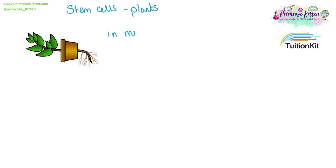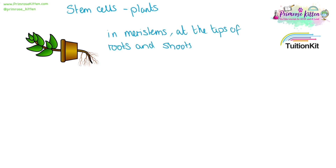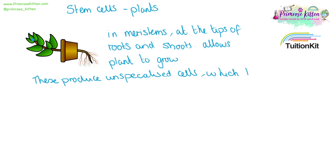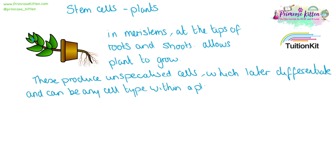Plants also have stem cells in their meristems. These are at the tips of the roots and the shoots, and these allow plants to grow. These will produce unspecialized cells which later differentiate and can become any cell type within a plant.